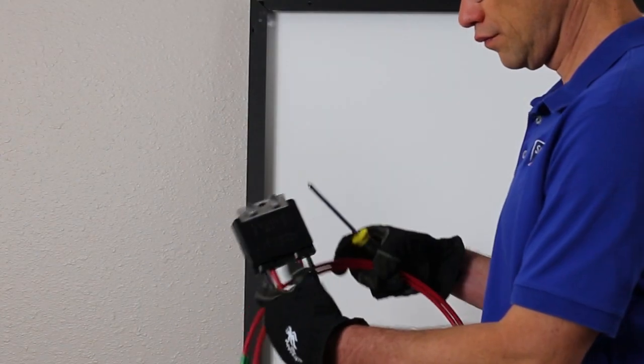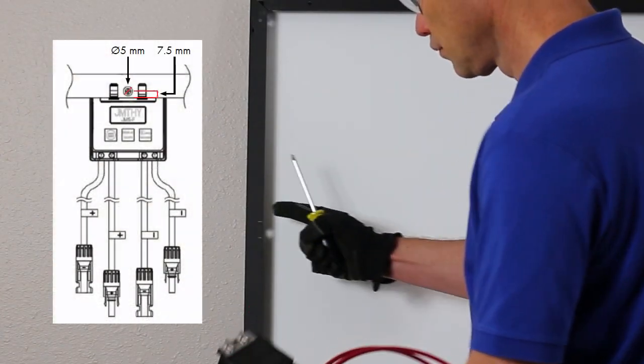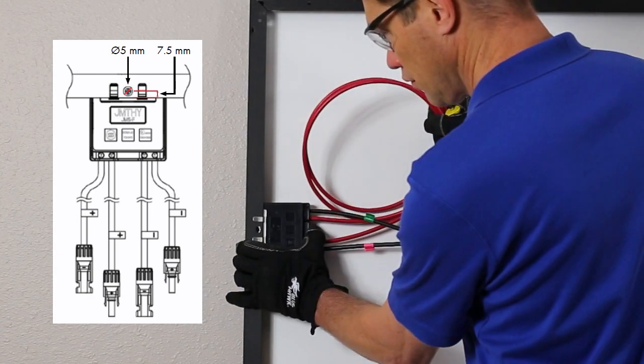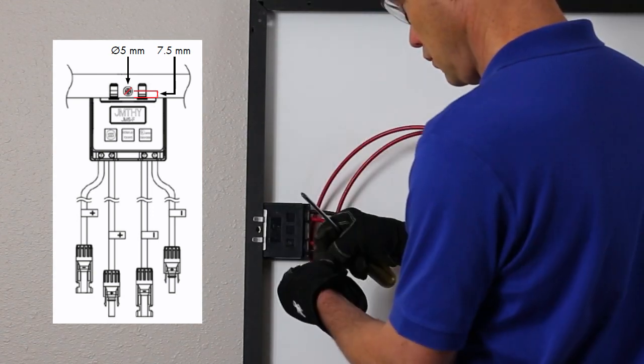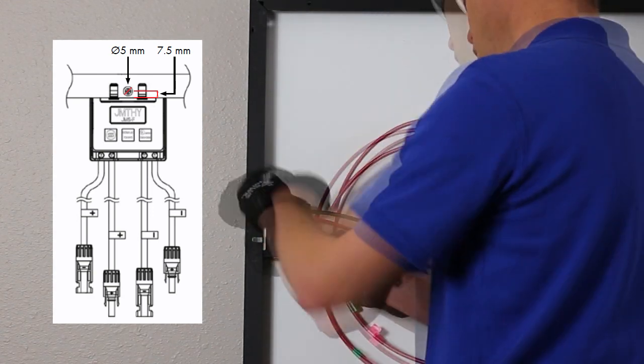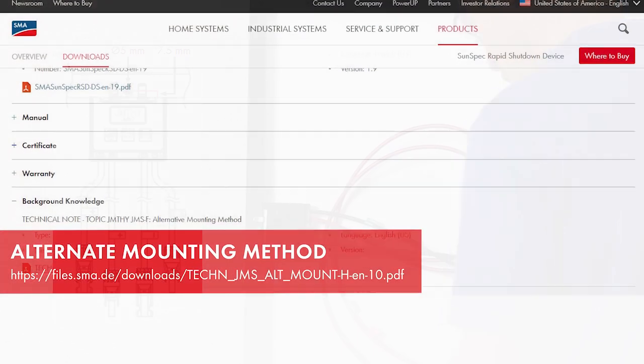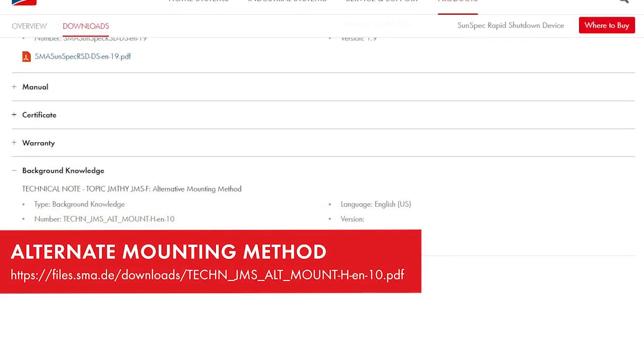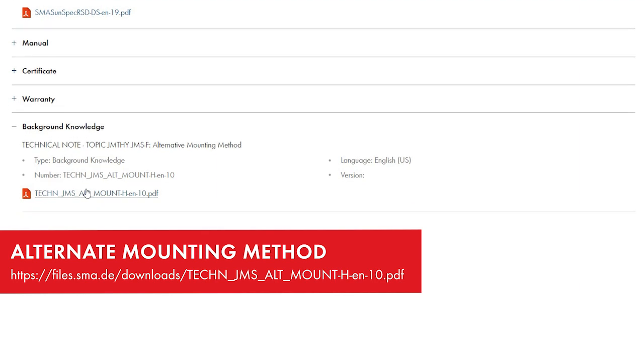Installation of this receiver utilizes a module frame mounting hole that is centered 7.5 millimeters from the frame lip. The device slides onto the module frame, and the included screw and washer are used to secure the device. If there is not an appropriate mounting hole available, please consult the SMA technical note for the alternate mounting method.